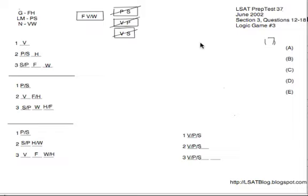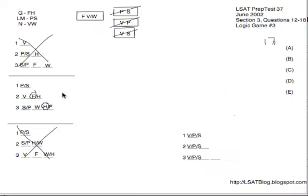Question 17: if F is not on three, what could be true? F is always on three in the top and bottom possibilities, so we're only considering the middle possibility, where F is on two and H is on three. The only remaining ambiguity is whether P is on one and S on three, or S on one and P on three. Could P be on two? No — P is on one or three. Eliminated. H on two? No — H is on three. Eliminated. S on three? Yes, that could easily happen with P on one. Answer is C.